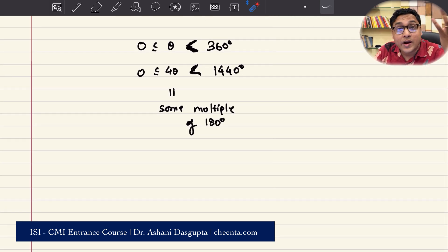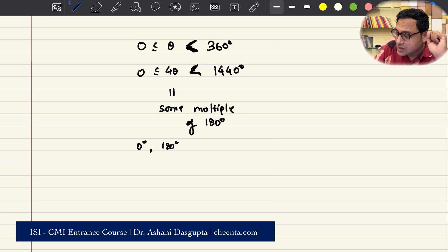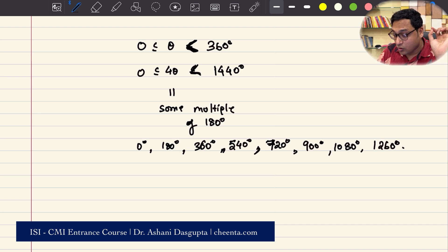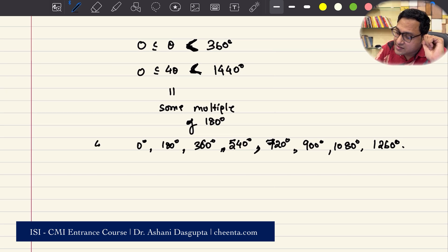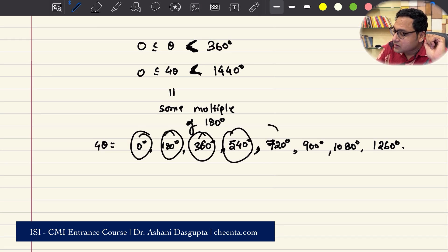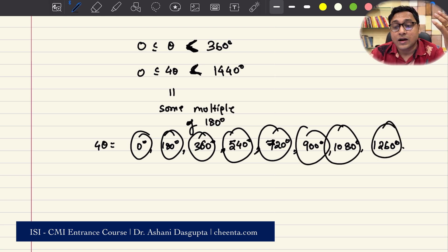What are the possible multiples of 180 degree between 0 to 1440? Well, 0 is one of them, 180 degree is one of them, 360 degree is the next one because 2 times 180, 540 degree is the next one. Then you have 720 degree as the next one. Then you have 900 degree as the next one, then you have 1080 as the next one, and then you have 1260 as the next one. These are all. You won't include 1440 because it is strictly less than. So 4 theta, whenever it is equal to these values, you have a solution.